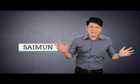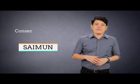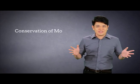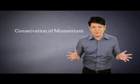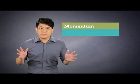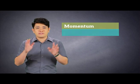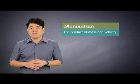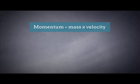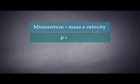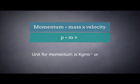Hi, I'm Mr. Simon, and today our focus is conservation of momentum. Momentum is defined as a product of mass and velocity. The formula is easy: P equals mV. Therefore, the unit is kg meters per second or newton seconds.